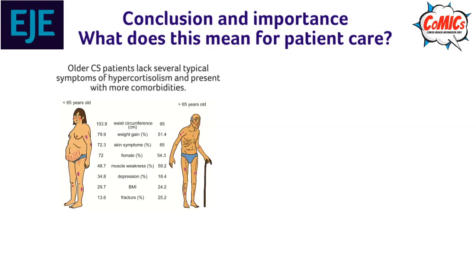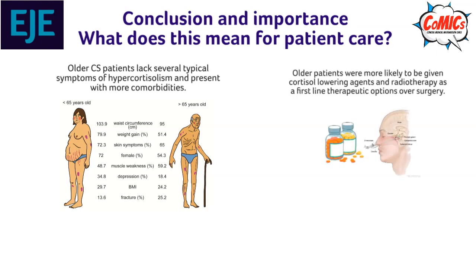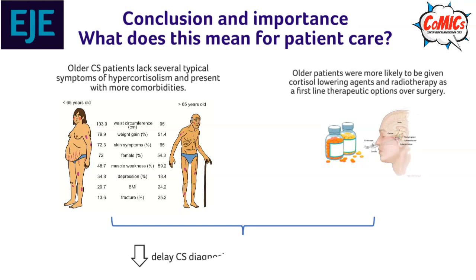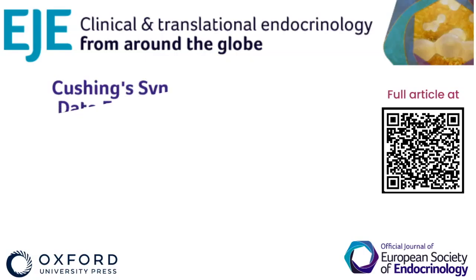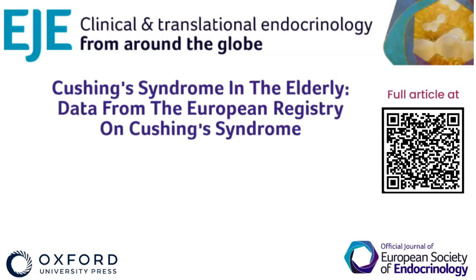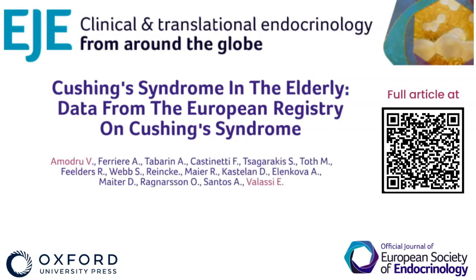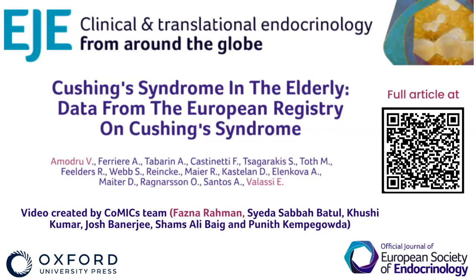These results show that there are age-related differences in the presentation of CS, and these should be taken into account when suspecting hypercortisolism in the elderly. Older patients were also more likely to be conservatively treated. This data may help reduce the delay in diagnosis of CS, which has been associated with increased morbidity and mortality. To read the full article, please follow the link provided or scan the QR code.